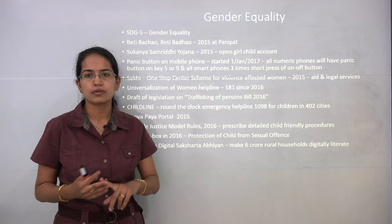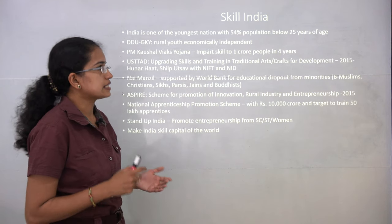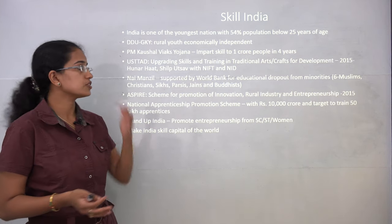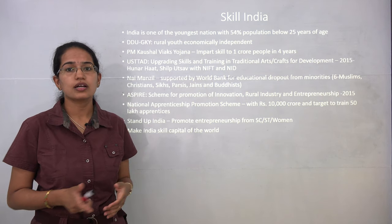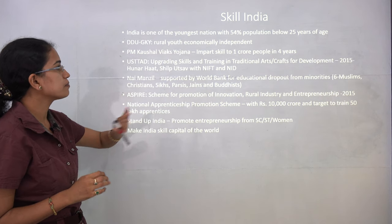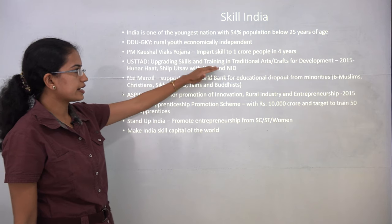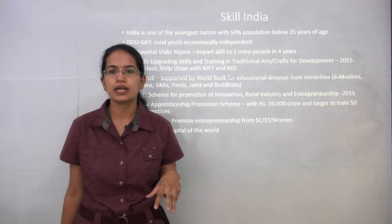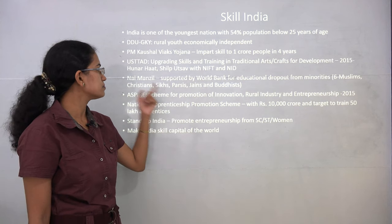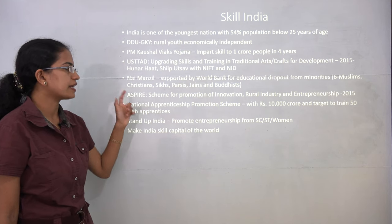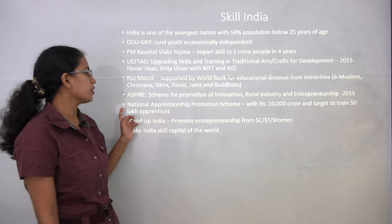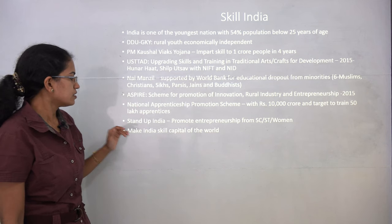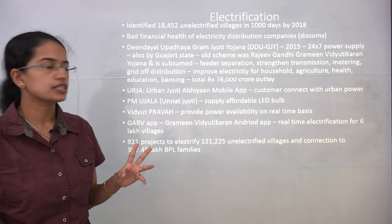Sarva Shiksha Abhiyan talks about providing digital education to rural India. India is considered the skill capital of the world with nearly 54 percent of people below 25 years capable of working. Pradhan Mantri Kaushal Vikas Yojana is a key element of Skill India. USTAD — Upgrading Skills and Training in Traditional Arts and Crafts — was launched in 2015. Nai Manzil Yojana, supported by the World Bank, covers educational dropout minorities from six religions. The National Apprenticeship Promotion Scheme targets 50 lakh apprentices with nearly 10,000 crore.